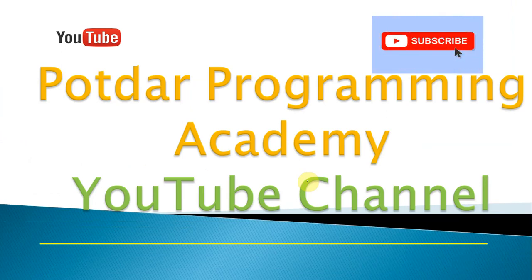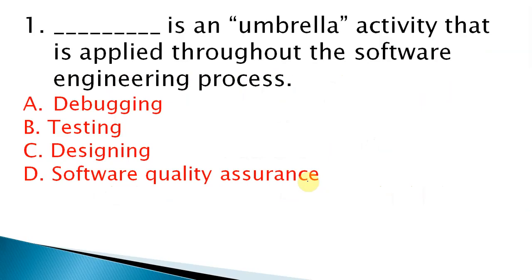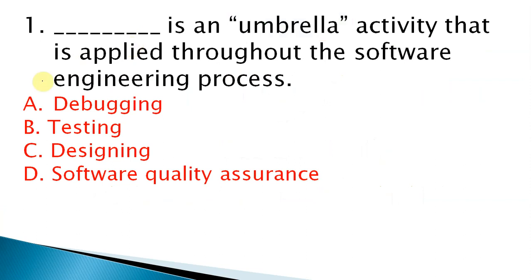Now we will start with the questions. The first question: dash is an umbrella activity that is applied throughout the software engineering process. Options are: debugging, testing, designing, and software quality assurance. The correct answer is software quality assurance.